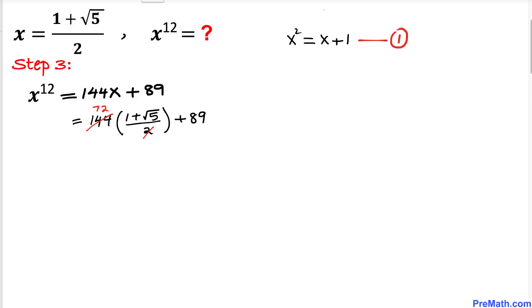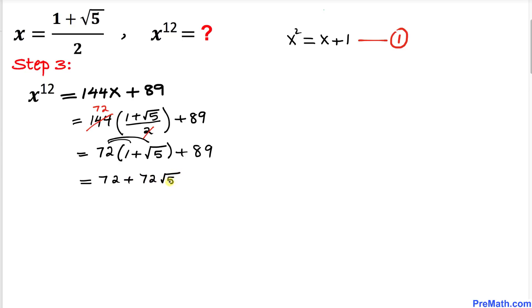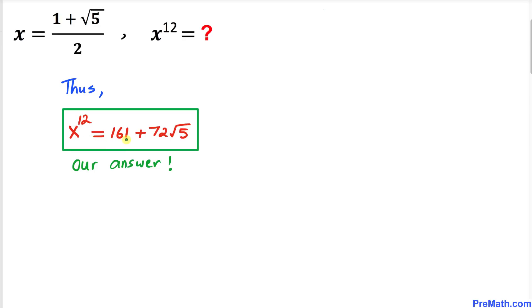Distributing gives 72 + 72√5 + 89. Therefore x^12 equals 161 + 72√5. Thanks for watching and please don't forget to subscribe to my channel for more exciting videos!